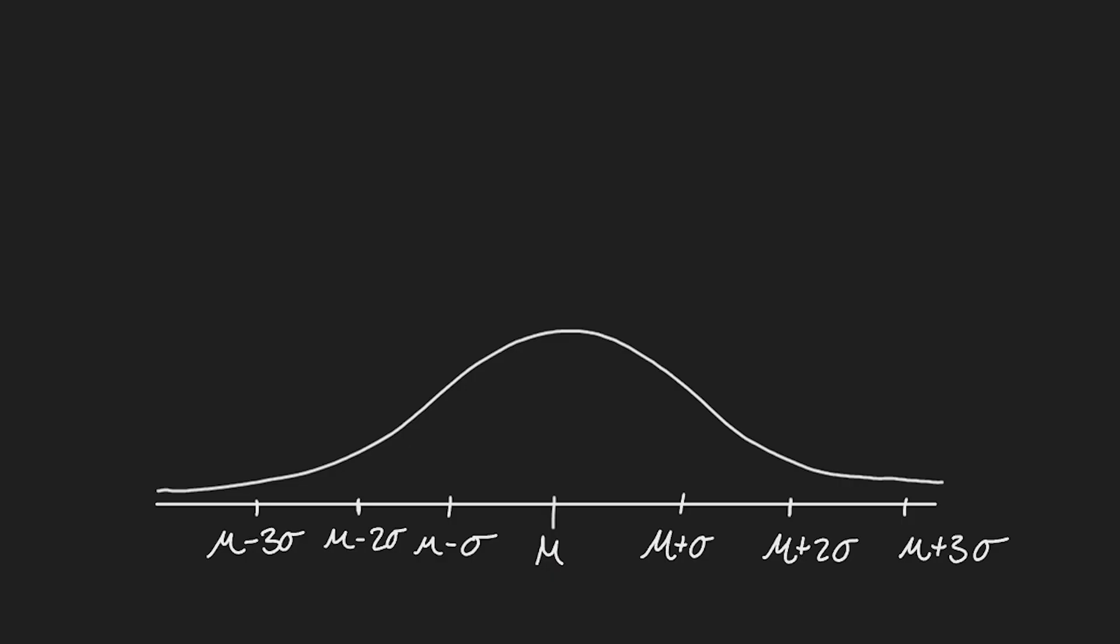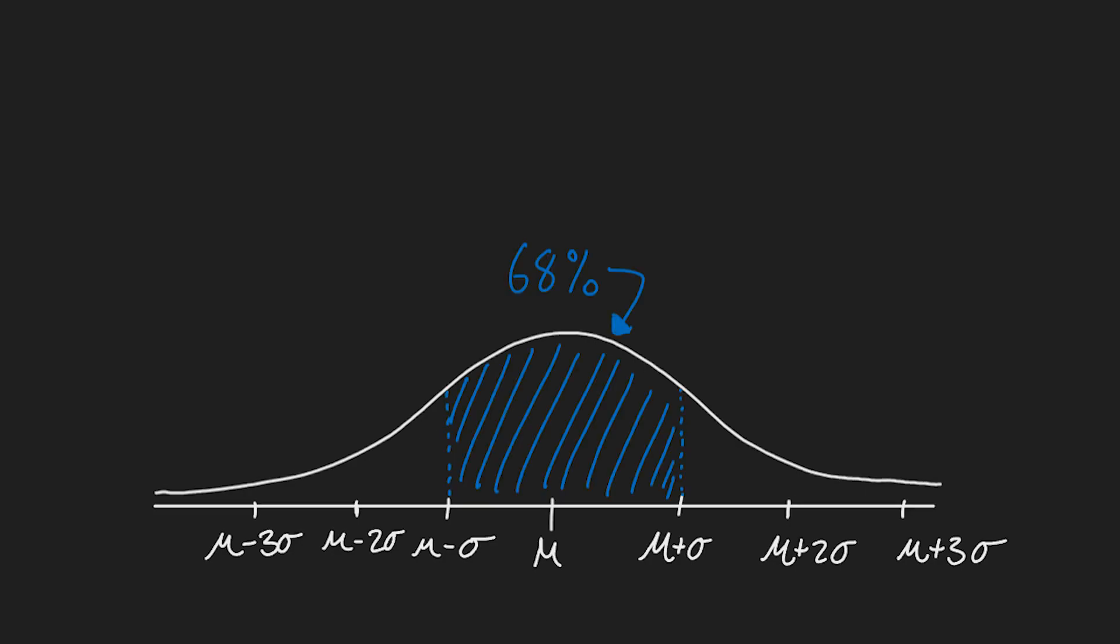Now listen up, because this is an important part. There is a rule that 68% of the data in a normal distribution lies between one standard deviation above the mean and one standard deviation below the mean. This means that 68% of men are between 67 inches and 73 inches, or between 5-7 and 6-1.